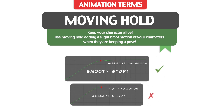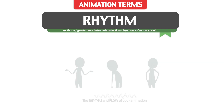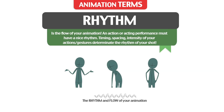Moving Hold: keep your characters alive. Use moving hold by adding a slight bit of motion to your characters when they are keeping a pose. Rhythm: it's the flow of your animation. An action or acting performance must have a nice rhythm. Timing, spacing, and intensity of your action and gestures determine the rhythm of your shots.